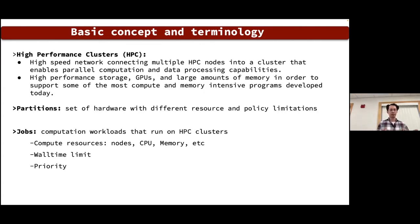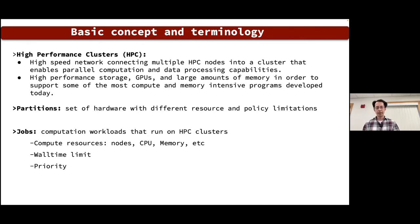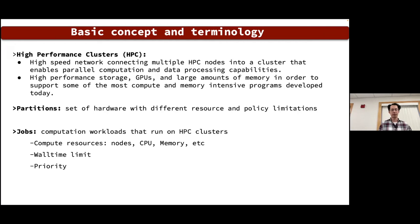A job is a computation workload that runs on HPC computers. Key terms associated with jobs: compute resources (nodes, CPUs, memory, storage), walltime limit (how long the job takes to run), and priority (SLURM calculates each job's priority value to decide which job runs next and which waits in the queue).